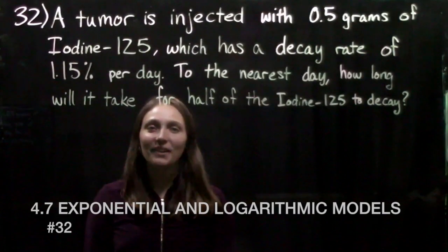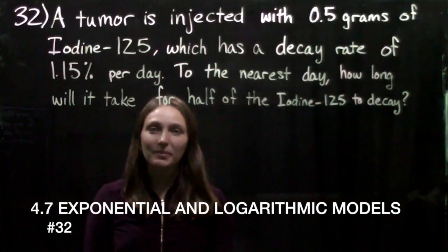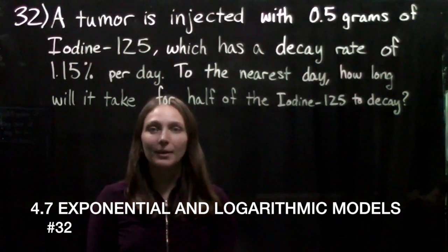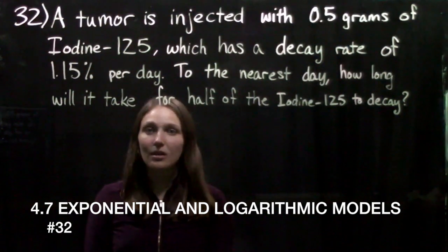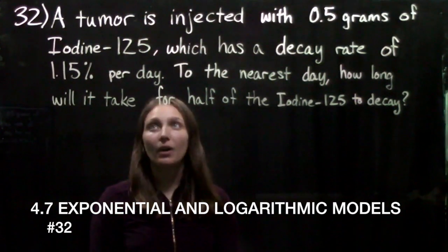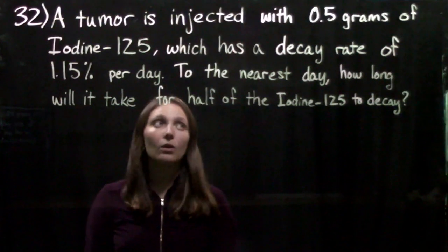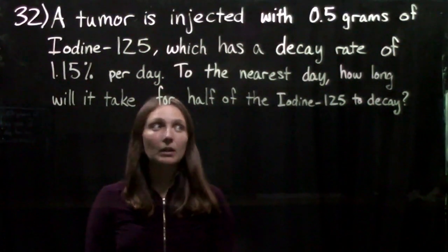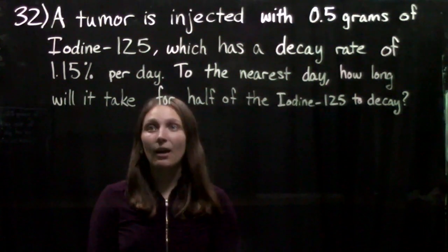Hey guys, in this video we're in chapter 4 on exponential and logarithmic functions, section 7 on exponential and logarithmic models. We're doing problem 32 which says a tumor is injected with 0.5 grams of iodine-125 which has a decay rate of 1.15 percent per day. To the nearest day, how long will it take for half of the iodine to decay?